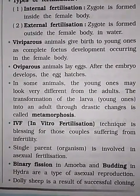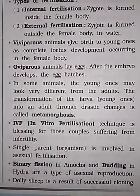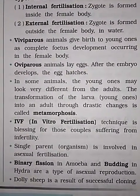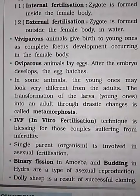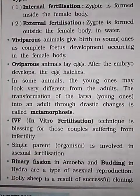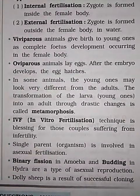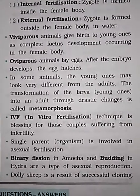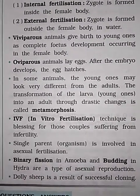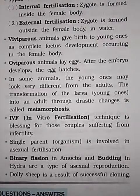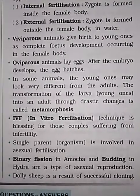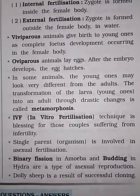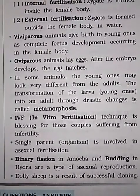Viviparous animals give birth to young ones as complete foetus development occurs inside the female body. Oviparous animals give birth after the embryo develops and the egg hatches.